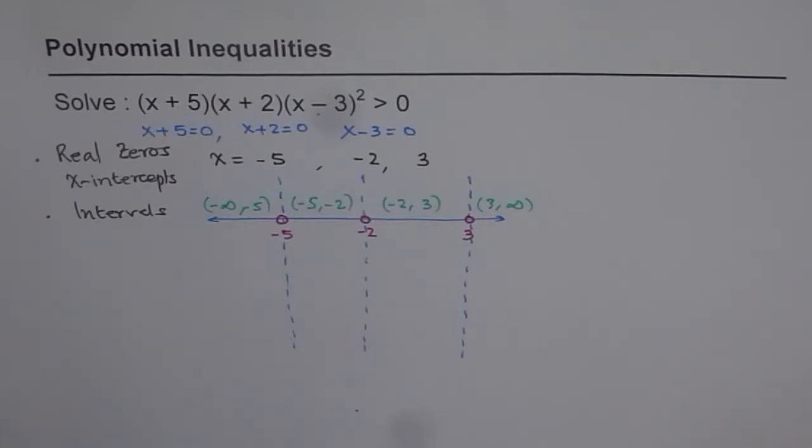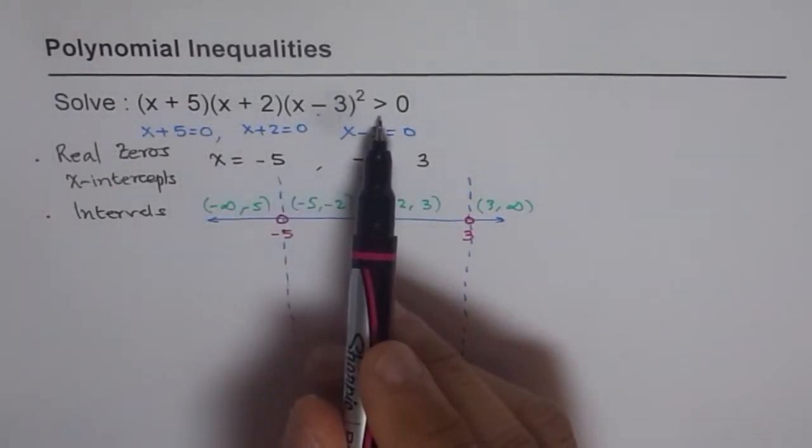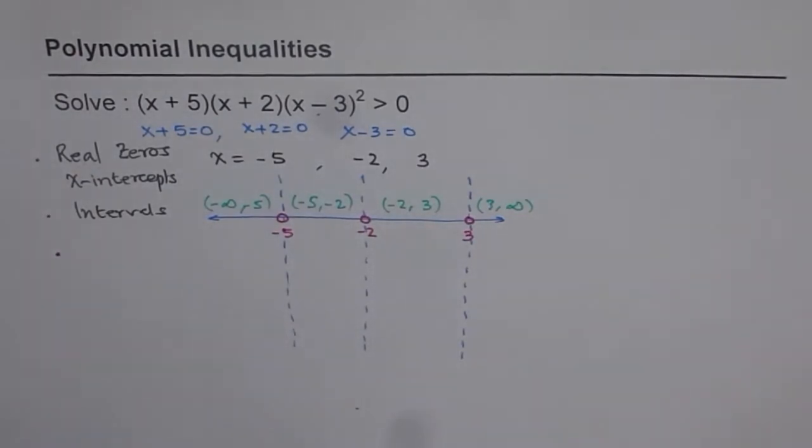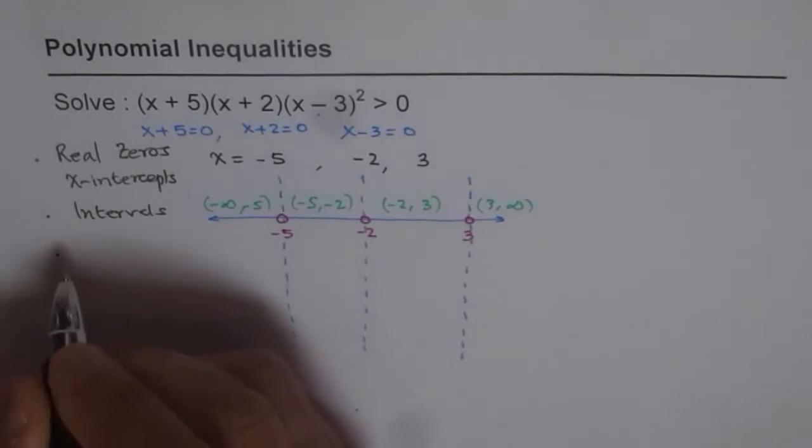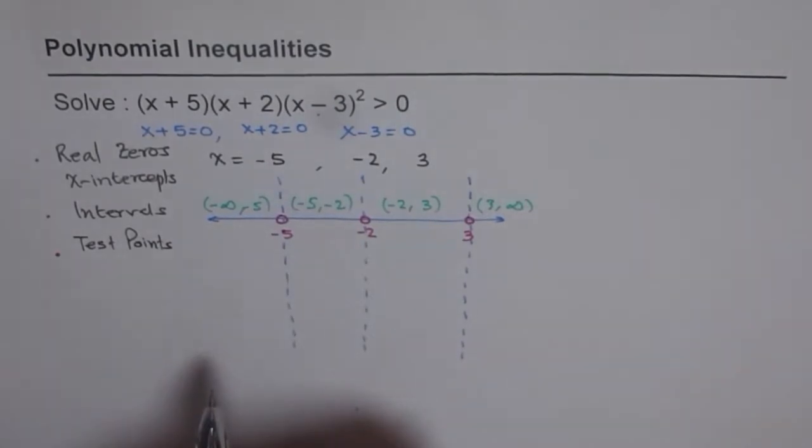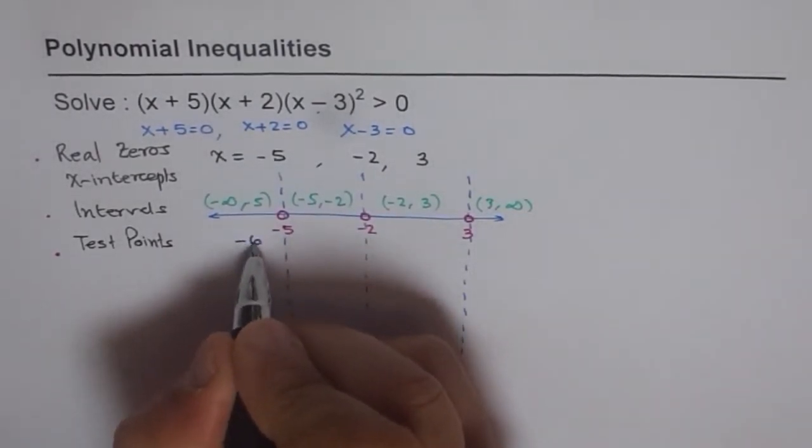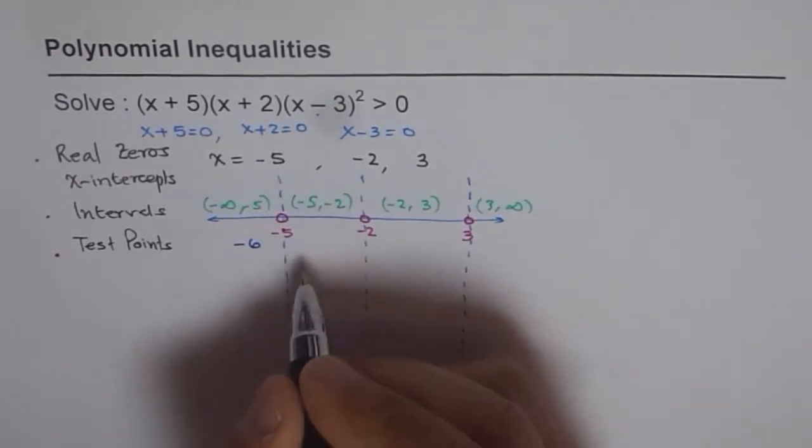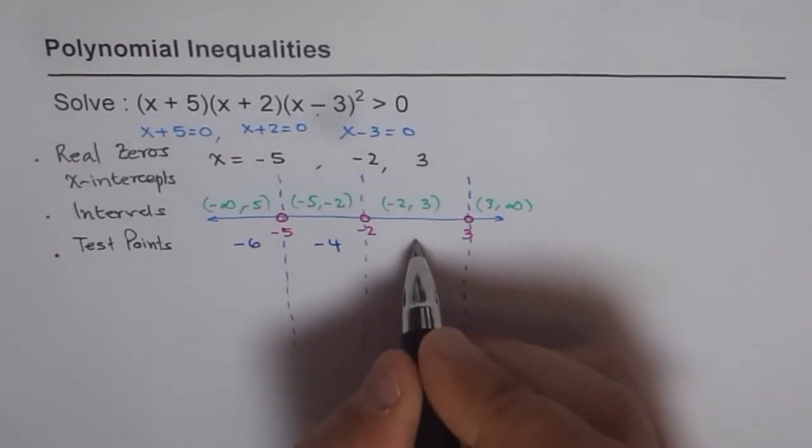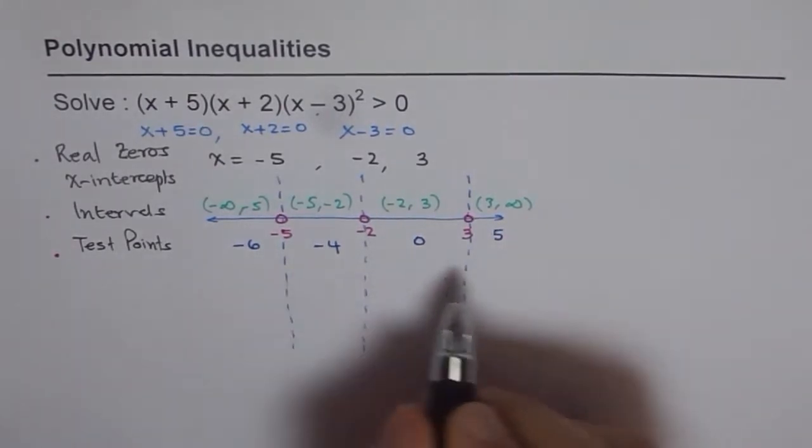Now the idea is to check in which interval is this function positive. If we know it is positive, it's part of our solution. So what we can do is, we can just pick up different test points. These test points should be in the interval itself. So that is kind of very important to understand. Intervals and a test point within the interval. So the test point within this interval on the left side of minus 5 could be minus 6. Test point between minus 5 and minus 2 could be minus 4. And between minus 2 and 3, 0 is a good test point. And after 3, we can take 5 as our test point. So these are our test points.